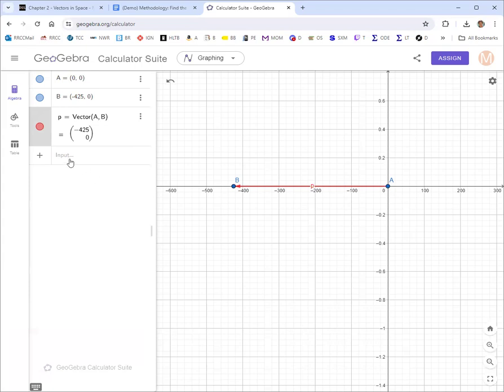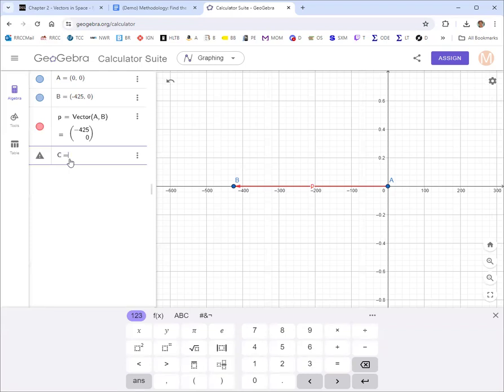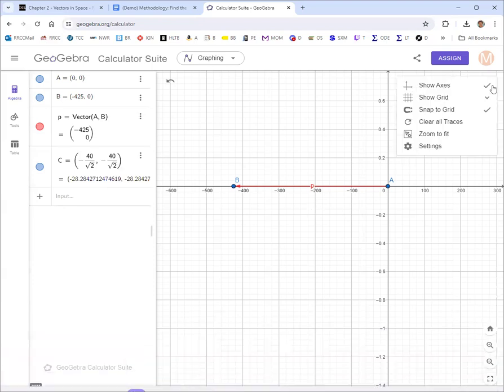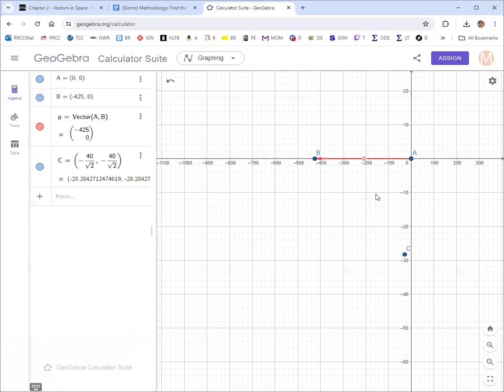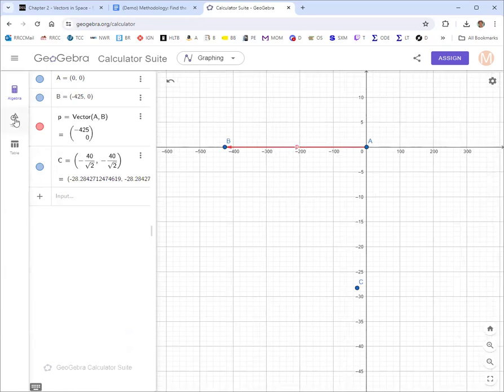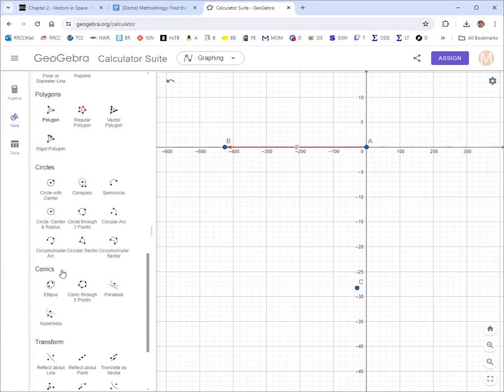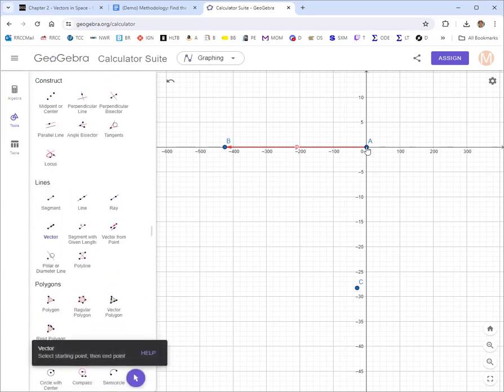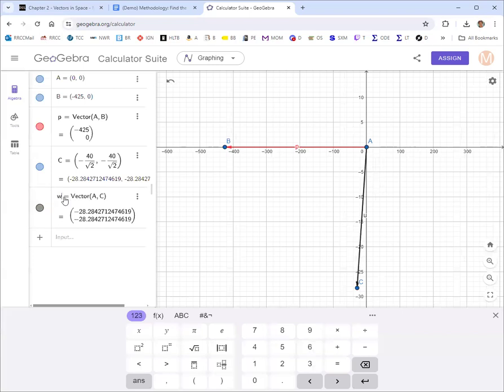It says select starting point, then end point. So click on starting point and then click on the ending point. And you've got yourself a vector there. You can change the name of it by just editing that. And you can change the color in settings if you want to do that. And then we'll draw the wind vector by going to point C. That was negative 40 over square root of 2, and negative 40 over square root of 2. Zoom to fit to see that for C. And then again, let's go to vector. And we'll do one from A to C. That's our wind vector.